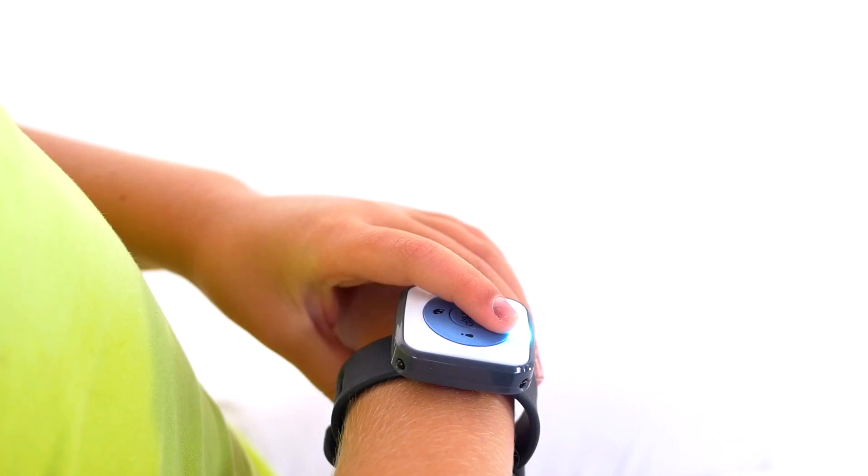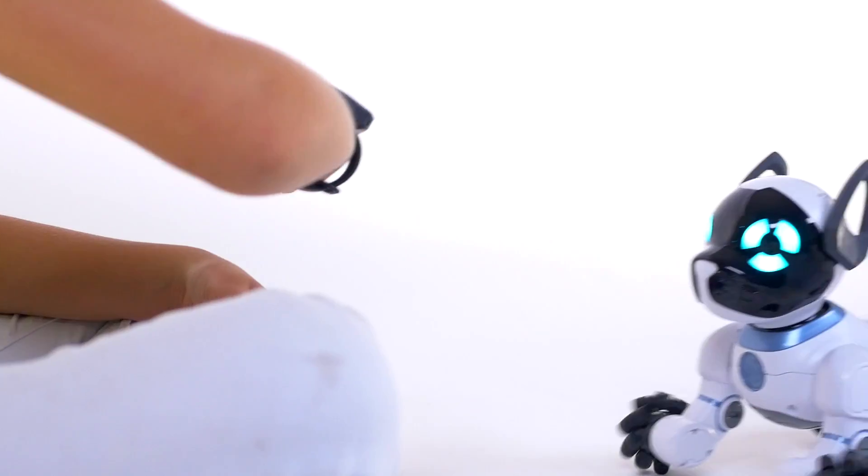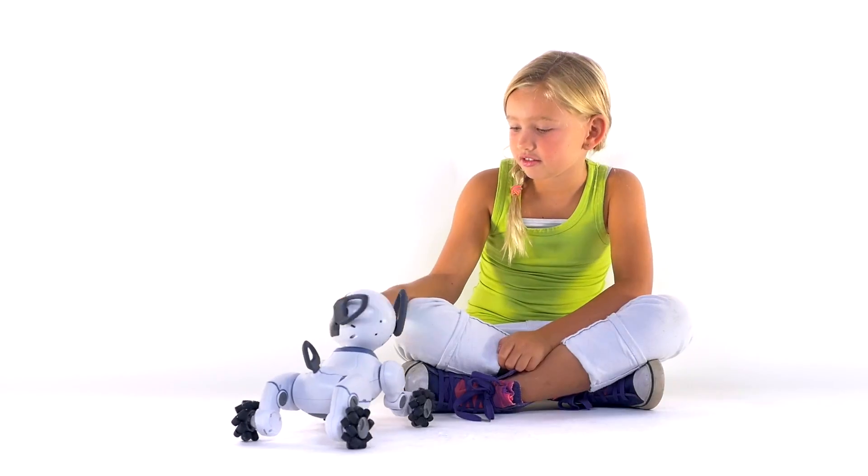You can also use the smart band to train Chip. When you like what you see, you can reinforce that sort of behavior with a like. And Chip will adapt to do more of that sort of stuff over time.